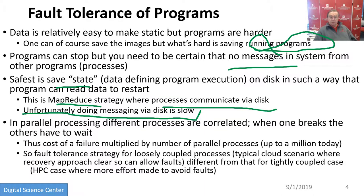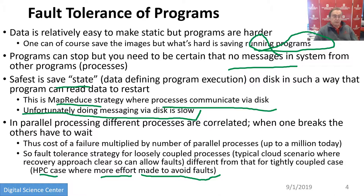Parallel computing is particularly sensitive to fault tolerance. If you have a million processes running and one fails, and that failure is not recoverable, the results of a million processes are thrown away — that's pretty serious. That's why in the HPC case, where there's tight synchronization and programs are so closely linked that you have to restart all of them, they try very hard to make their systems totally fail-safe. This points out that the style of computing affects things: if you're doing independent event processing, it's not nearly as sensitive.